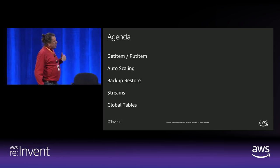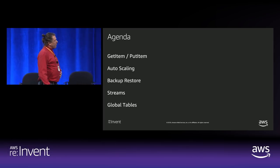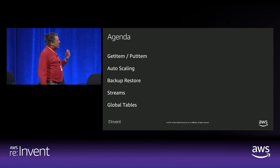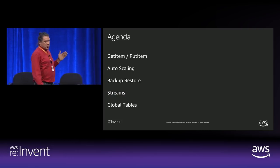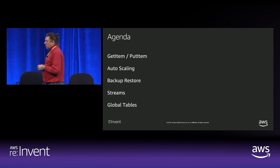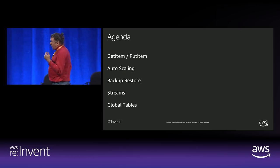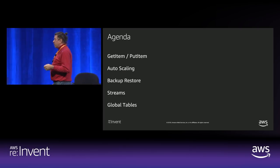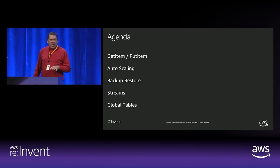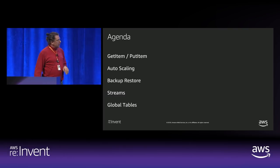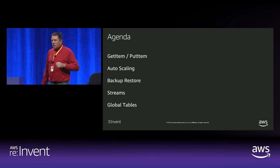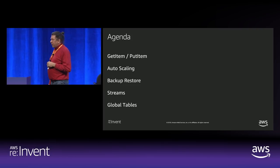The way we're going to do this is walk through five different features of Dynamo, starting with the simplest and moving on until we get to global tables. We'll talk about how you get and put an item, auto-scaling and provisioning, how backup and restore works, streams, and we'll wrap up with global tables.